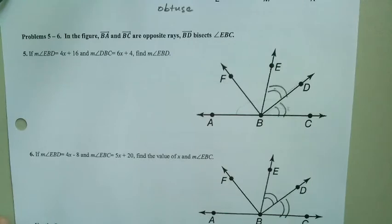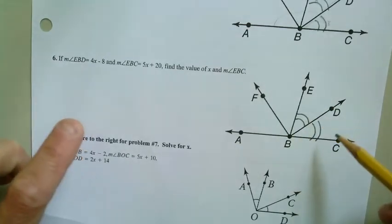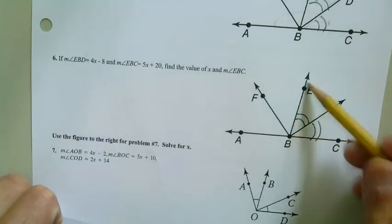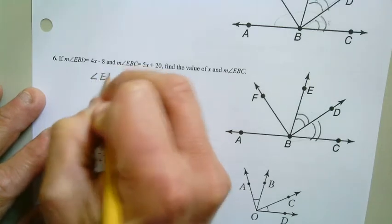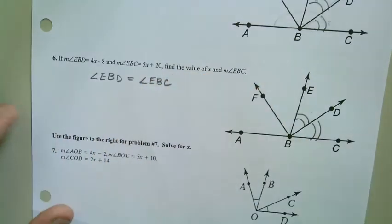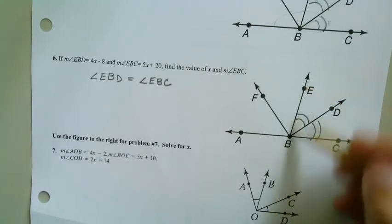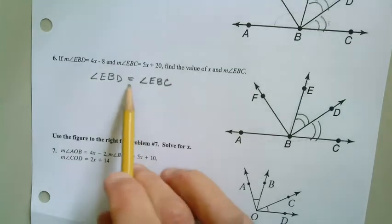You should be able to figure out number five pretty easily now that we've got that picture marked out. If I look at number six, this is usually the one that gives us the most difficulty. So if I look at this, they give us angle EBD, so this angle right here, and they give us angle EBC, which is this angle right here. We've got this acute angle and then this larger acute angle. Now I'm going to tell you that a lot of times students will make this mistake: angle EBD is equal to angle EBC.